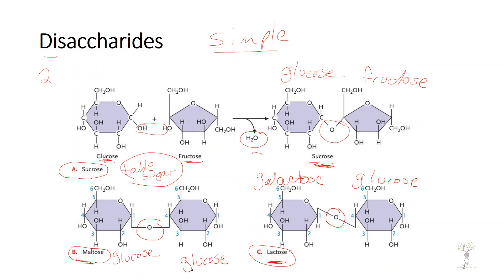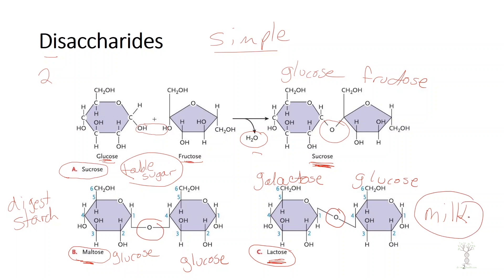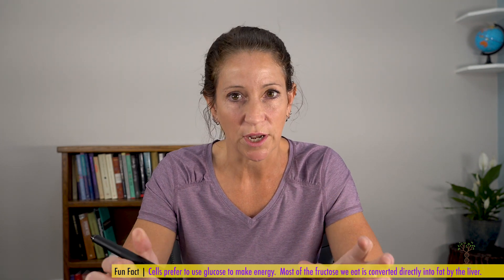Lactose is found in milk. Maltose comes from digesting starch — when we digest starches we eventually end up with these disaccharides. When we consume lactose we need to digest it by breaking it up into monosaccharides so that we can absorb them into our bloodstream.